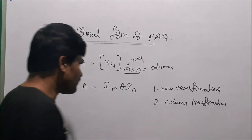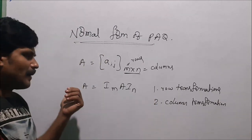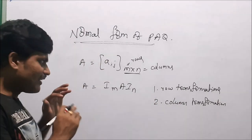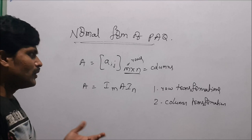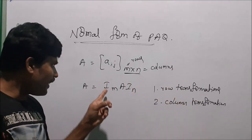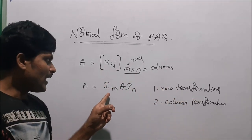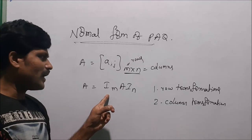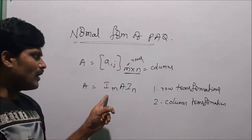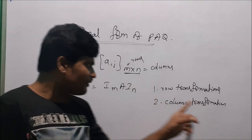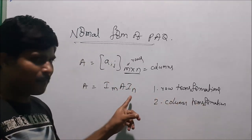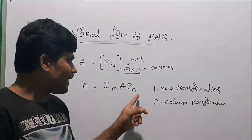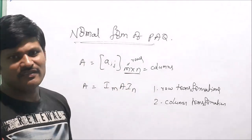Both row transformations and column transformations are applied on the matrix at the same time. Row transformations are applied on the pre-factor unit matrix Im in the RHS, and column transformations are applied on the post-factor unit matrix In in the RHS.